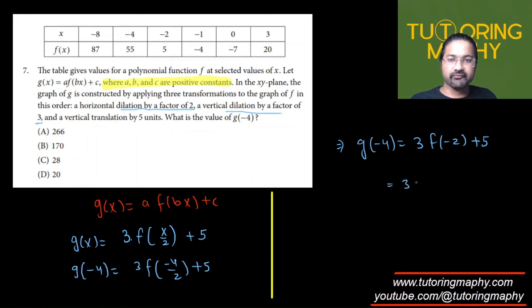And what is the value of f of negative two? It's from here, f of negative two, at negative two, the value is five. So it is five over here.